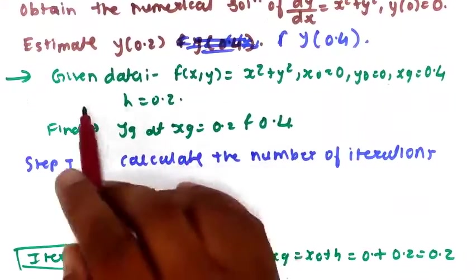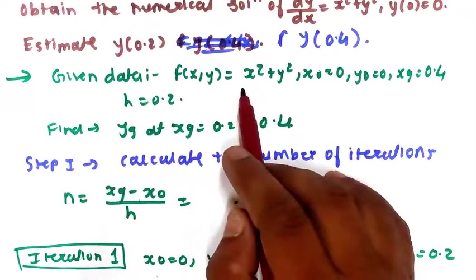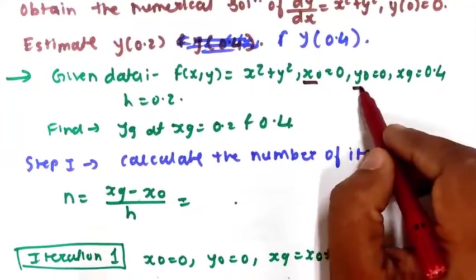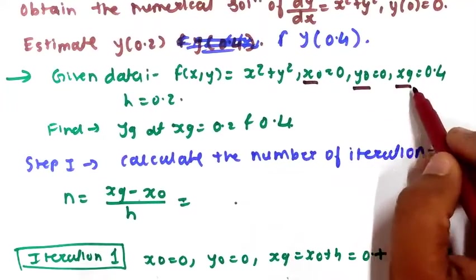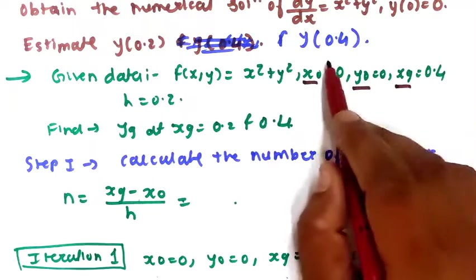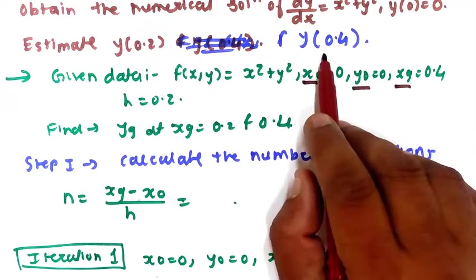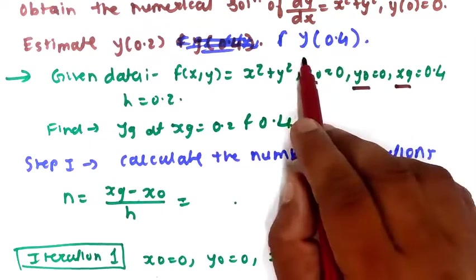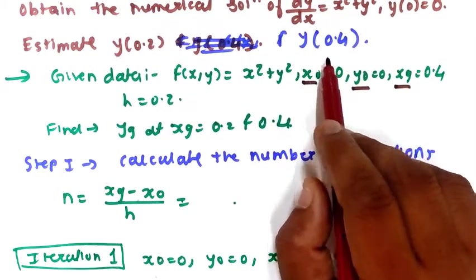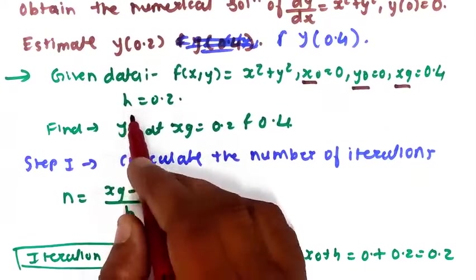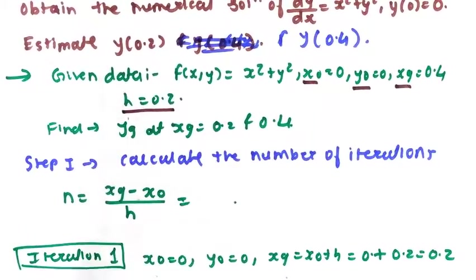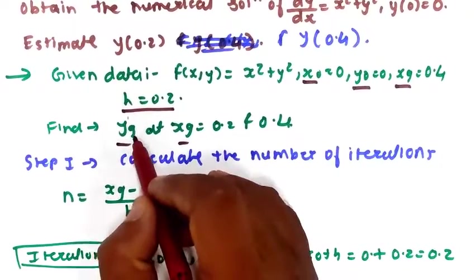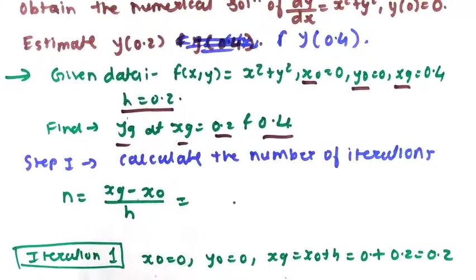Writing the solution: the function is given as x² plus y². The value of x0 is given, value of y0 is given, xg is given — that is 0.4 — meaning we have to find out the value of y at x equal to 0.4. h is the step size, which is 0.2. We need to find yg at x equal to 0.2 and 0.4.